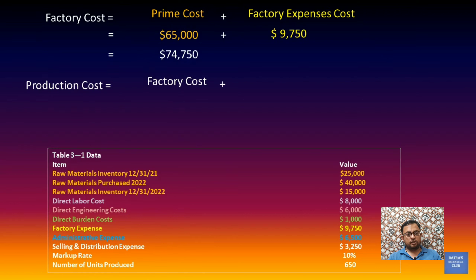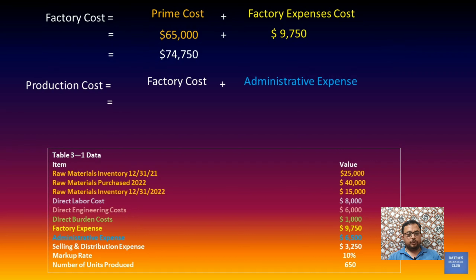Now we will calculate the production cost, which equals factory cost plus administrative expenses, as shown in the cost relationship diagram. We take the factory cost of $74,750 and add administrative expenses of $6,500, giving us a total production cost of $81,250.